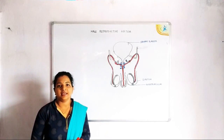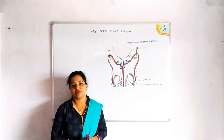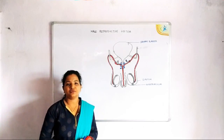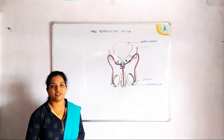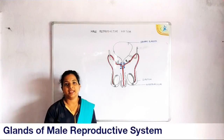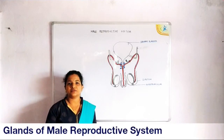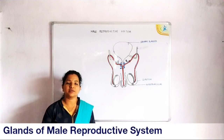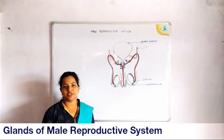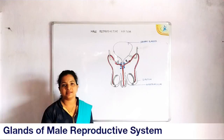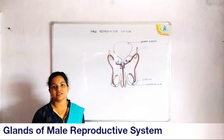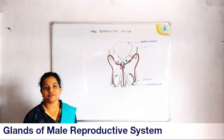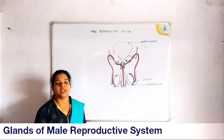Hello class. In this class we are going to continue with the human male reproductive system. In the previous class we discussed about the human male primary sex gland, or primary male sex organ, that is a pair of testis.